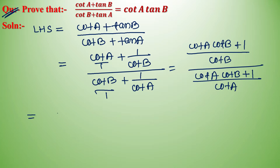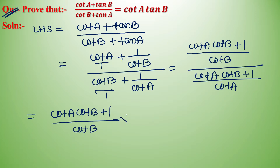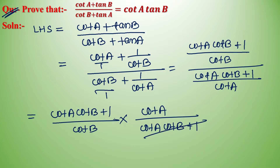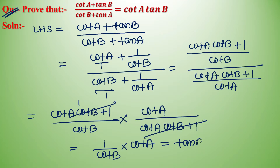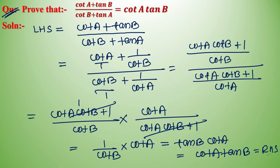Now we take the reciprocal, so this becomes (cot A · cot B + 1) / cot B multiplied by cot A / (cot A · cot B + 1). The (cot A · cot B + 1) terms cancel, giving 1/cot B · cot A = cot A · tan B = RHS. Hence proved.